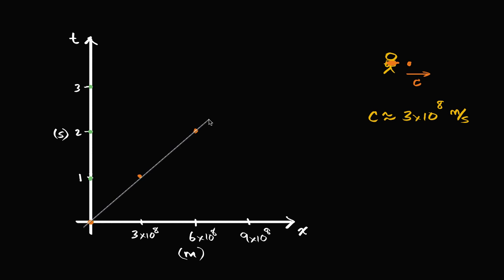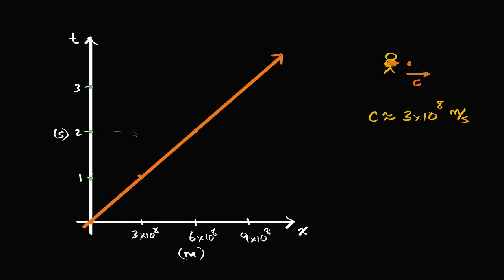So let's plot this. The position of that photon over time looks like this: after one second, three times ten to the eighth meters; after two seconds, six times ten to the eighth meters; after three seconds, nine times ten to the eighth meters. And that's reasonably interesting so far.